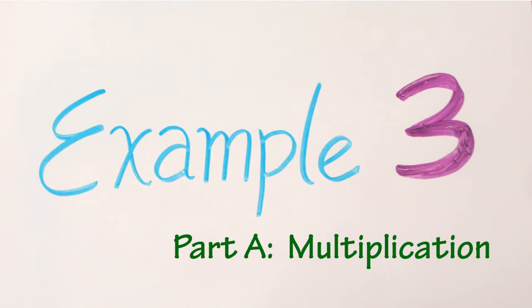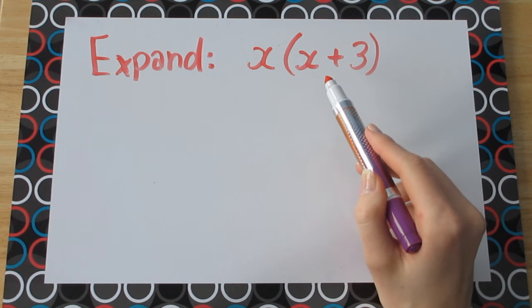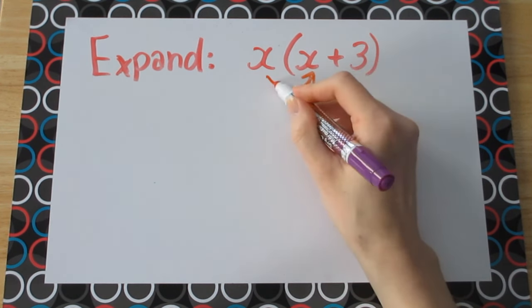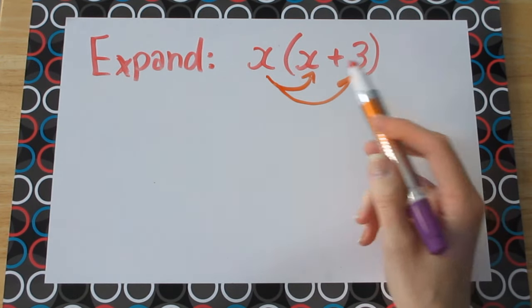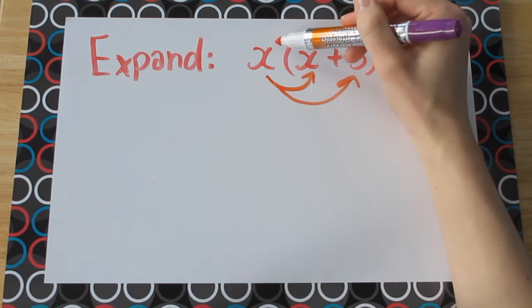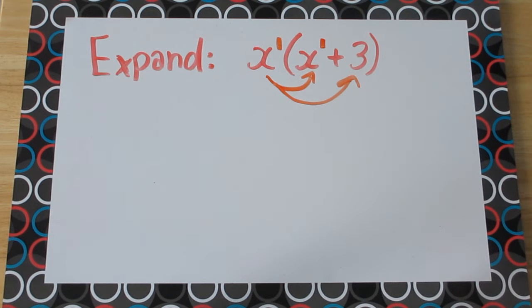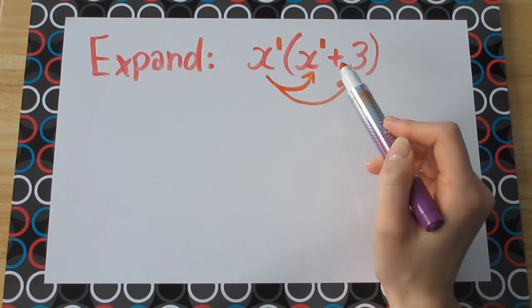Sometimes you'll encounter questions where more exponents are involved. So let's take a look at another multiplication question to get a hang of this before we start factoring. So this example is x multiplied with x plus 3. Again we're going to be using the distributive property, multiplying the outside term into the brackets. But this time we need to consider the exponent laws.